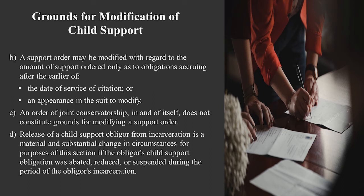After three years, you do not have to show material substantial change for child support — it's pretty easy to go in and do a modification up or down. The law is interpreted such that every three years there is a presumption that you should get to look at the obligor's wages. Also, if you don't have dental insurance in your order — dental insurance became a mandatory provision that courts had to consider as to whether it was available at reasonable cost starting in 2018 — that is also a basis to file a modification.